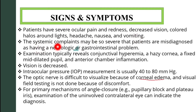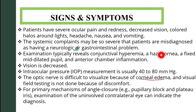The systemic complaints may be so severe that patients are misdiagnosed as having a neurologic or gastrointestinal problem. Examination typically reveals conjunctival hyperemia, a hazy cornea, a fixed mid-dilated pupil, and anterior chamber inflammation. Intraocular pressure measurement is usually around 40 to 80 mmHg.